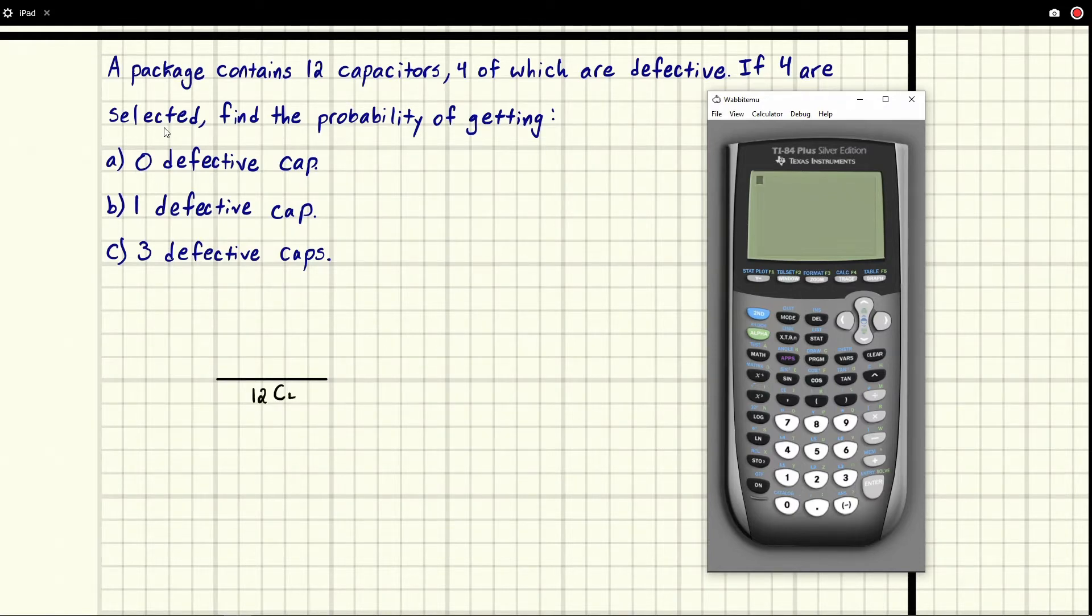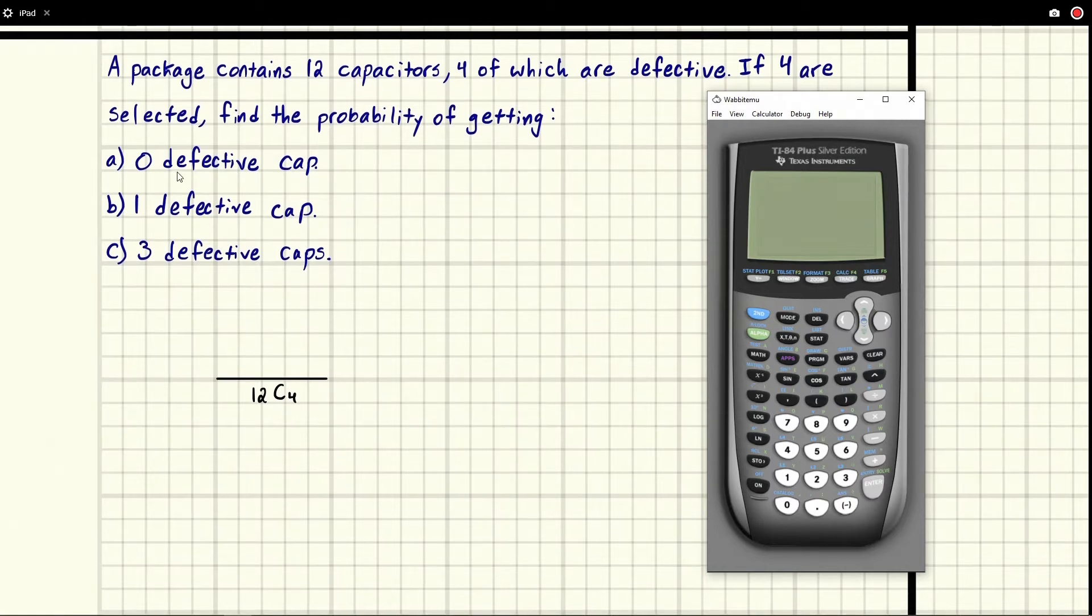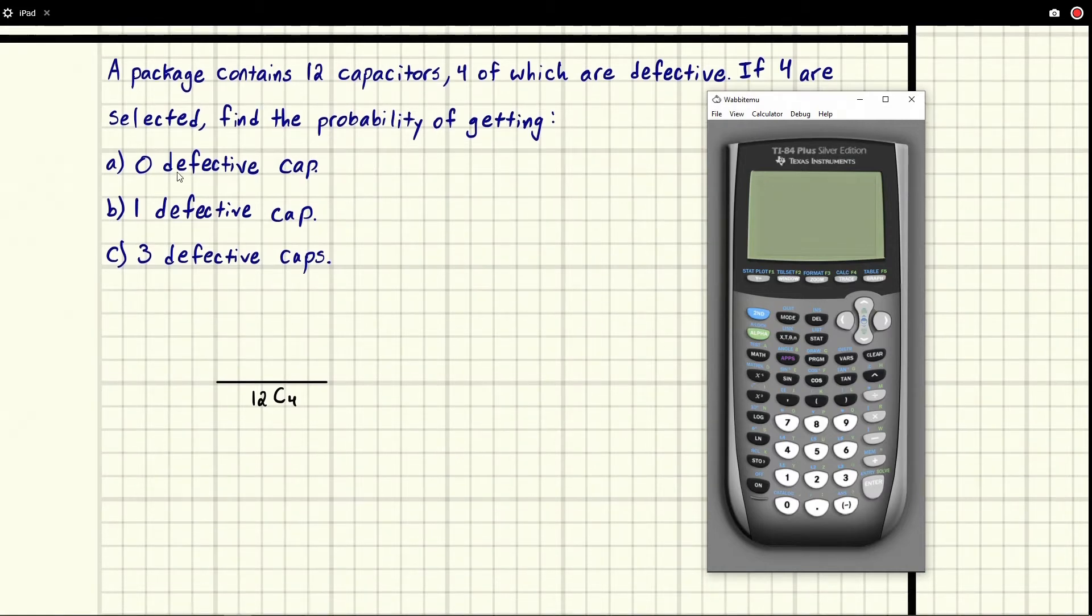Now it's not permutate 4 because we assume that all these capacitors are similar. So as long as we wind up with a defective one, that would be a problem. And it kind of helps to write it out.